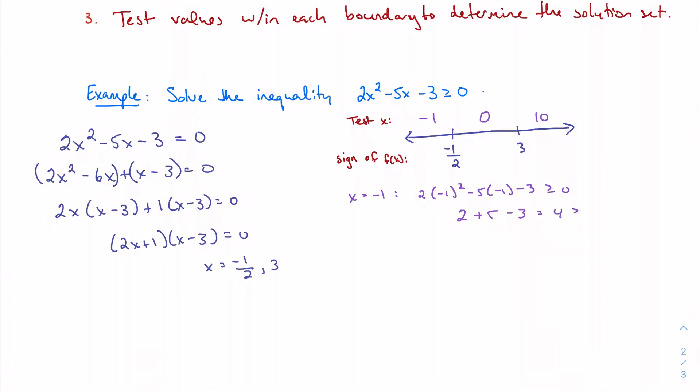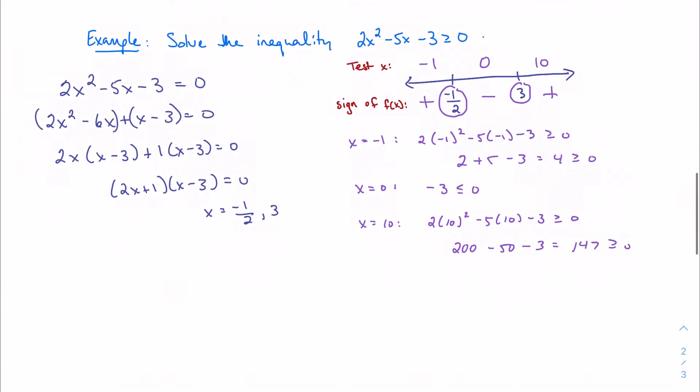At negative one-half we know that's equal to zero, and at three we know it's equal to zero. When I plug in zero, I'm just going to get negative three, which is negative. Then when I plug in ten, the calculation is quick: 200 minus 50 minus 3 gives me 147, which is positive.